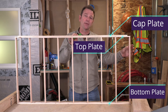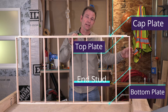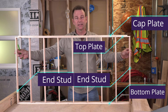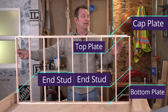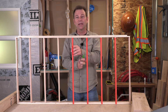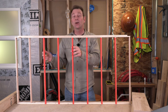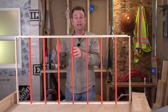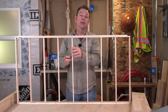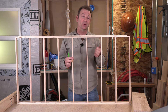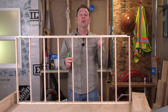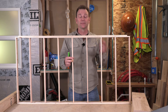On each end I have a vertical stud — this is my end stud, and this is my end stud. I have all of these common studs in between, and they're on regular intervals we call layout. Your layout could be 24 on center, 16 on center, or 12 on center.